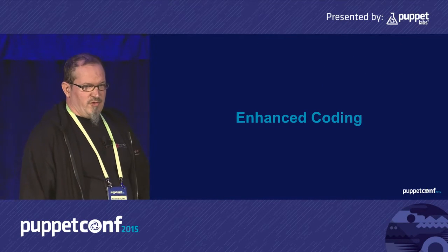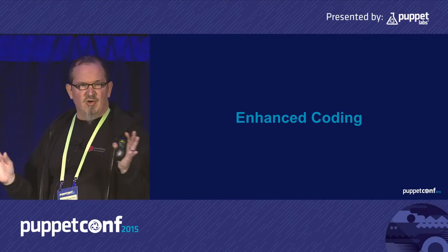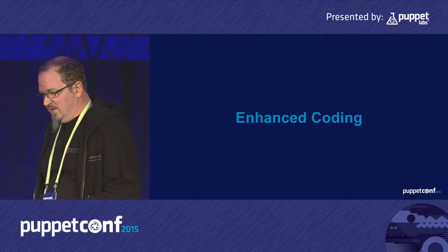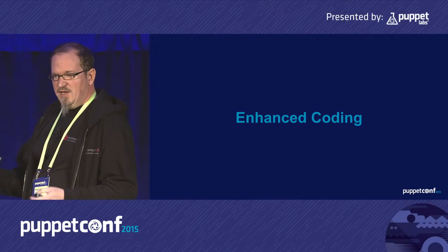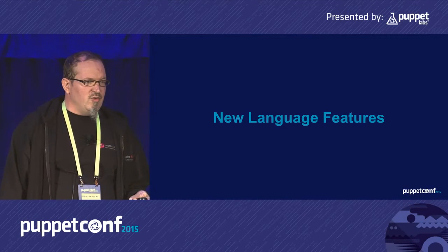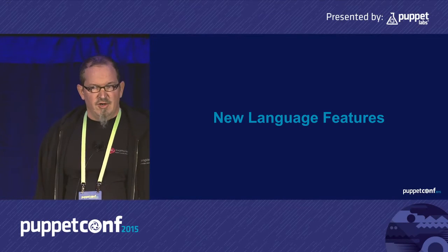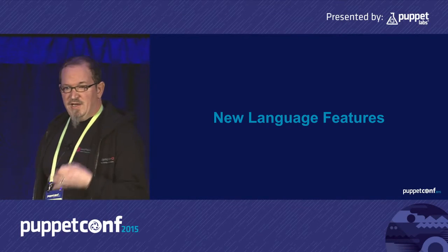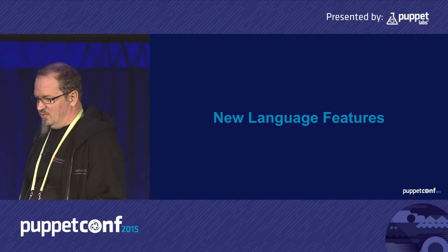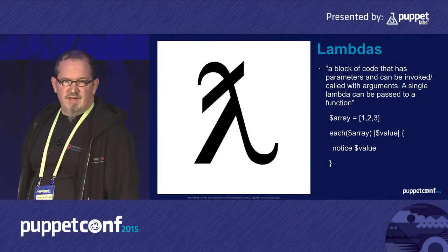Coming to Puppet 4, I decided to use 'Enhanced Encoding' as the title of this section. This is something where you can split up into three different areas. The very first one is new language features: stuff that was not there in Puppet 3, which is not compatible with Puppet 3 and will work on Puppet 4 only.